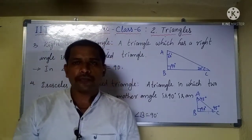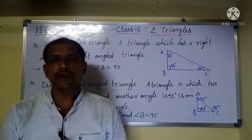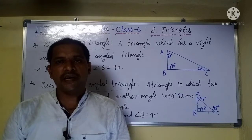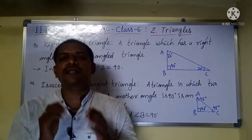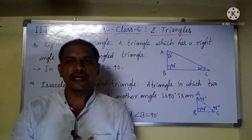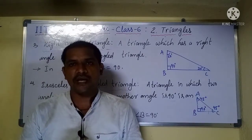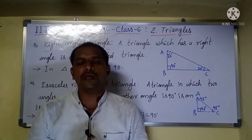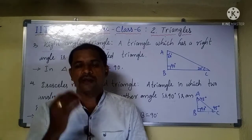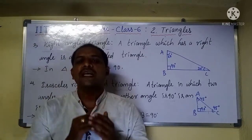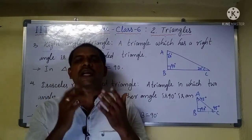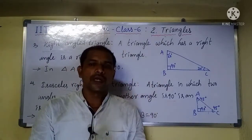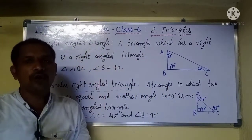So let us recap what we discussed today. Based on sides, there are three types of triangles. First, scalene triangle — if a triangle has three different sides. Second, isosceles triangle — if a triangle has two equal sides. Third, equilateral triangle — if all three sides are equal.